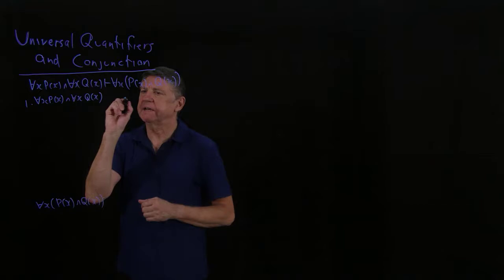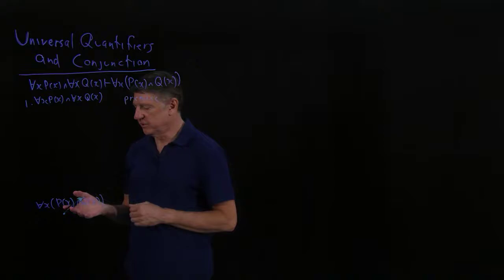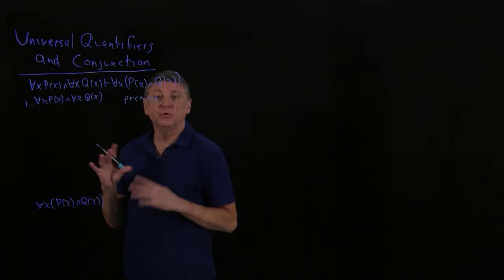We begin by taking a look at our premise. We have to write that as a premise, don't we? So we look at our premise and we look at our conclusion. I see that the premise is a conjunction.